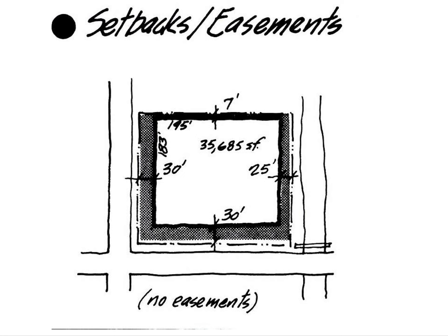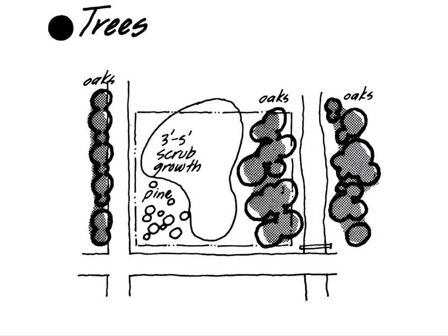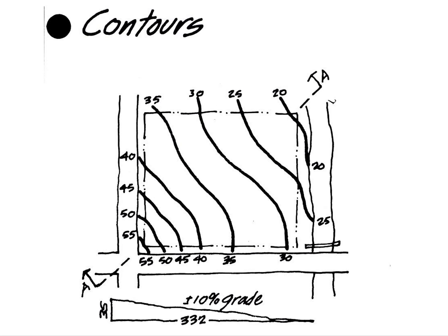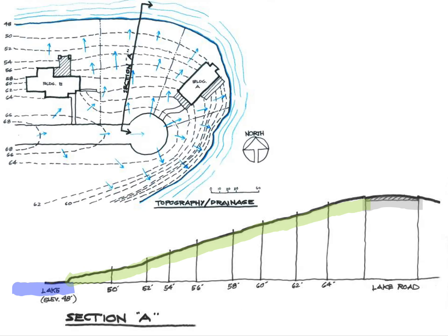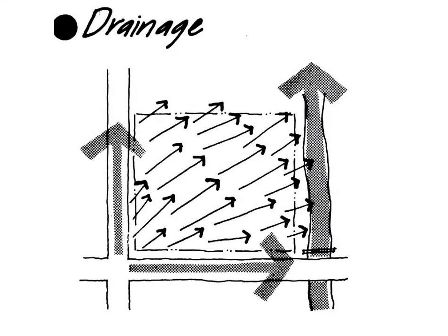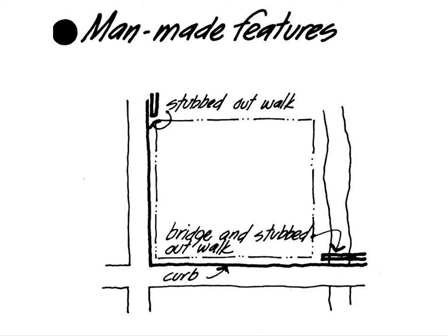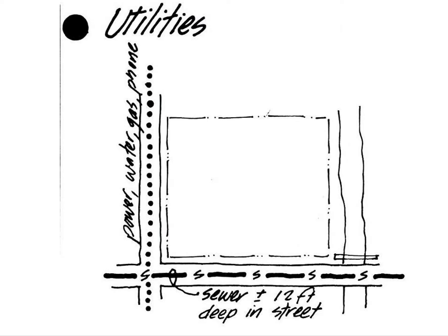There are trees on that site. This site also has contours — we'll work with contours later. You can see how the contours impact drainage: there's a road and the site slopes all the way downhill, so you have to think about how water will run off in the rain. Drainage is an issue. You also need to consider what man-made features are there, and where the utilities are.